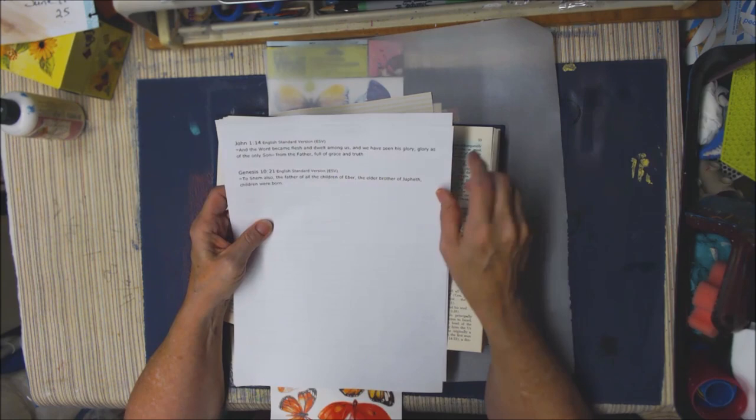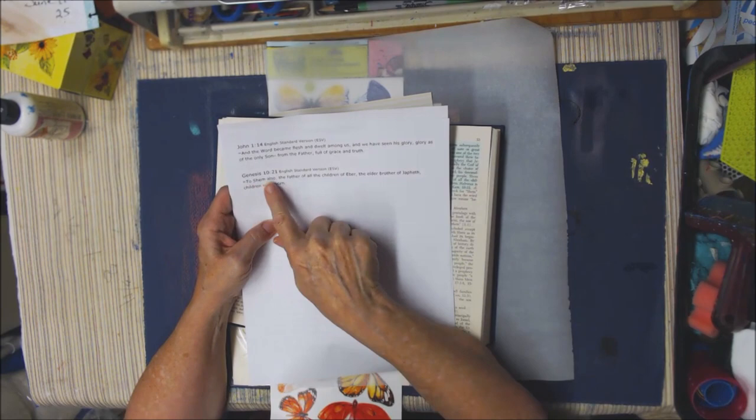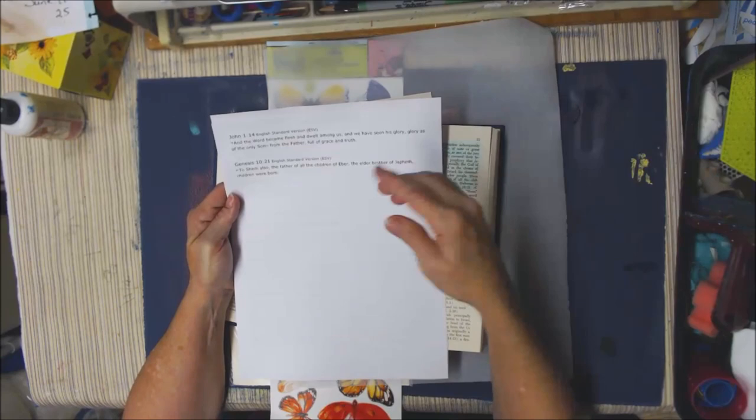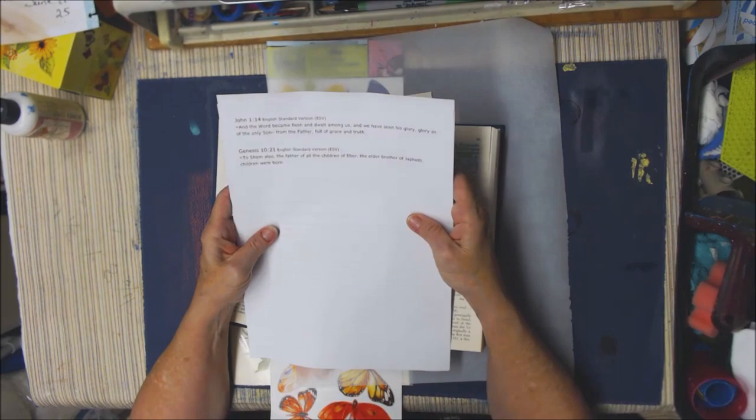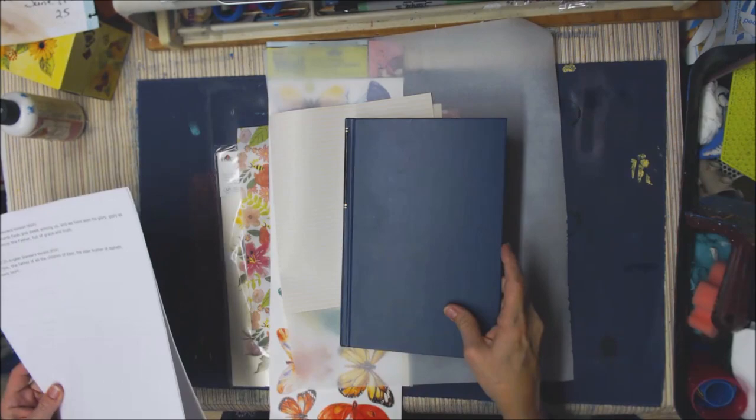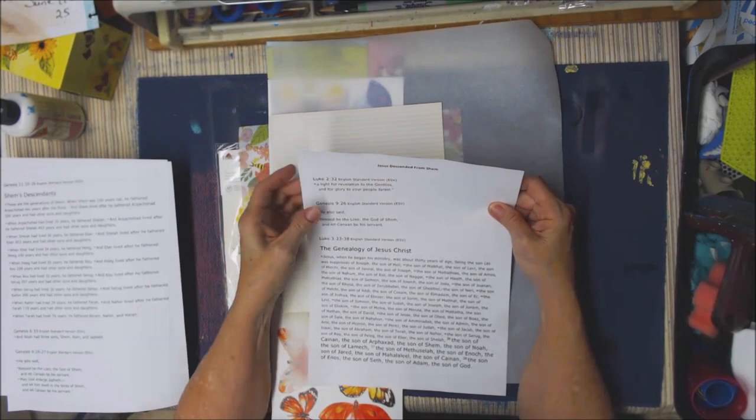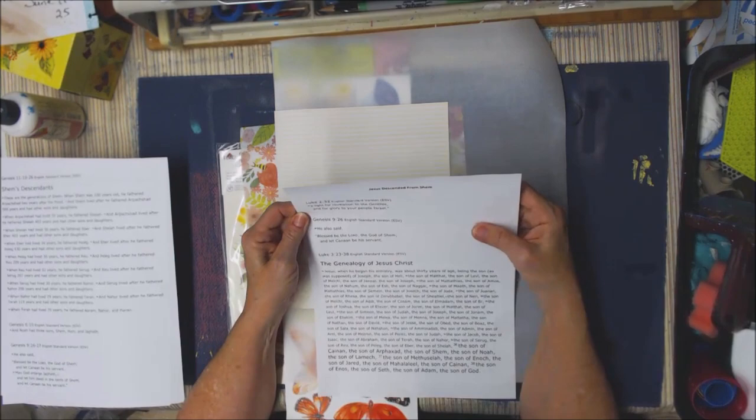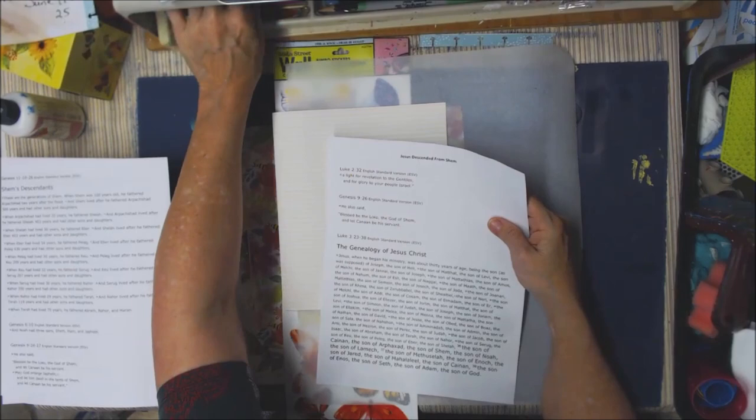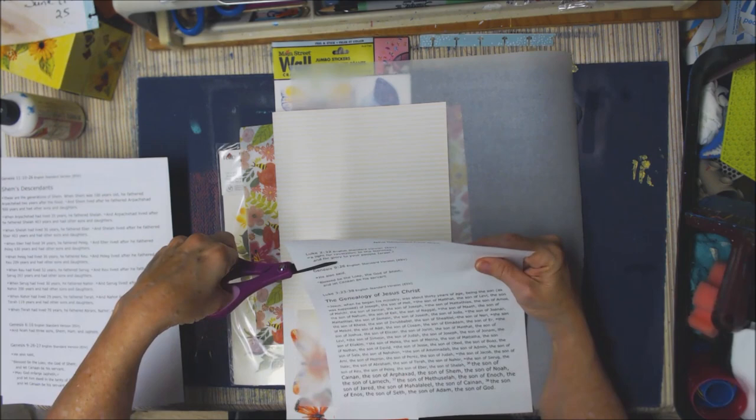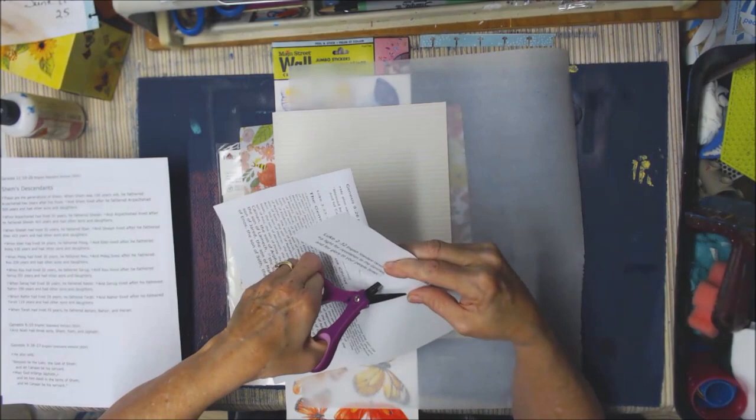Genesis 10:21 says, To Shem also, the father of all the children of Eber, the elder brother of Japheth, children were born. So he has other children, but the father of all the children of Eber, that's what's important. These are the children that are going to give us Jesus. I'm going to use this verse here, Luke 2:32, a light for revelation to the Gentiles and for glory to your people Israel. That's the verse we're going to use for our journal page today.